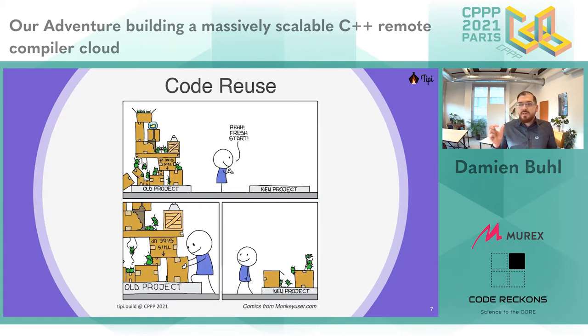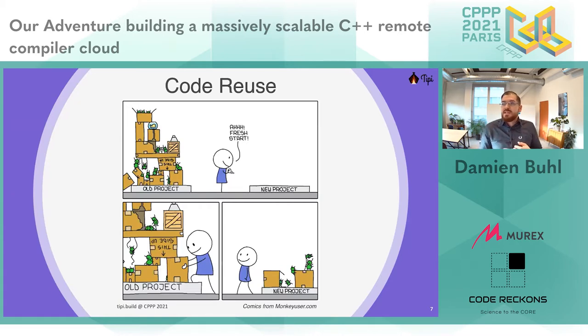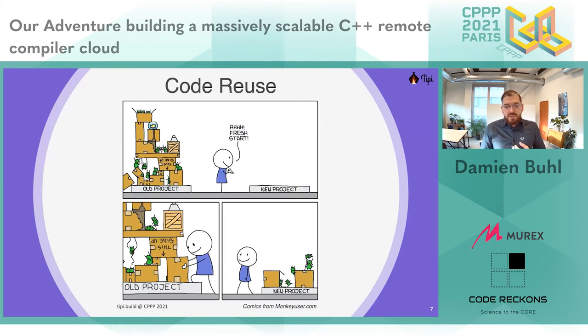Sure, there are some special cases where you will need some user input. But at the end of the TP adventure, we should be able to build any C++ code with our automatic reverse source code scanner. Many of our users are already doing it.